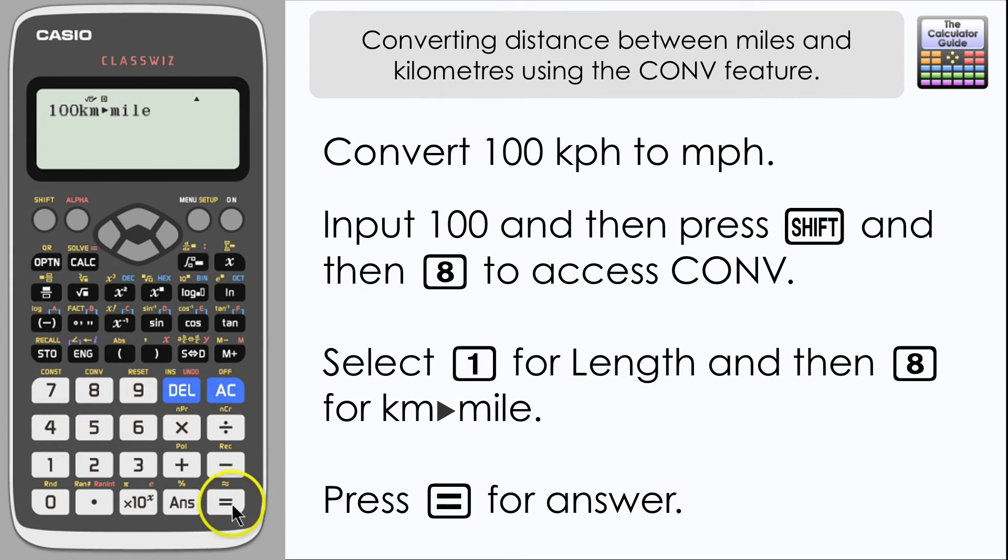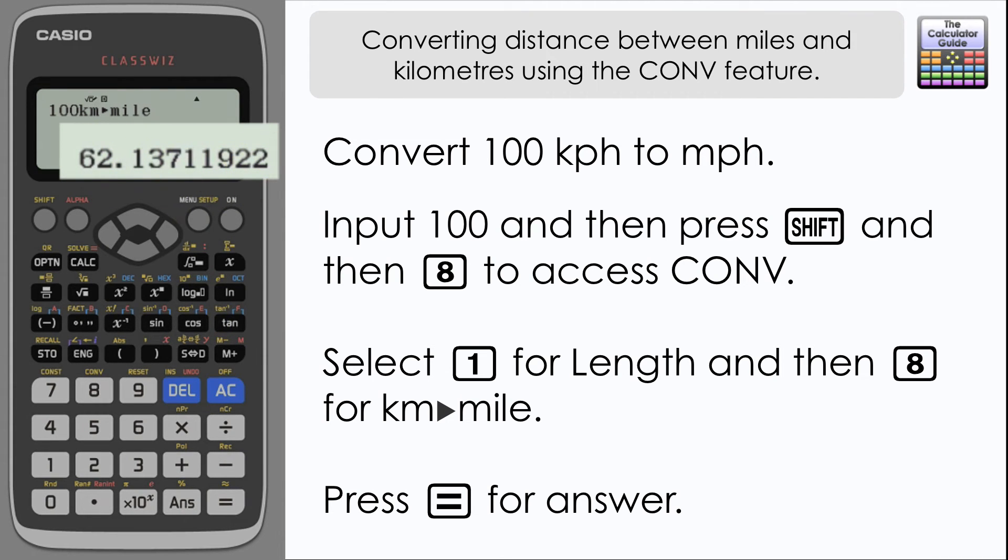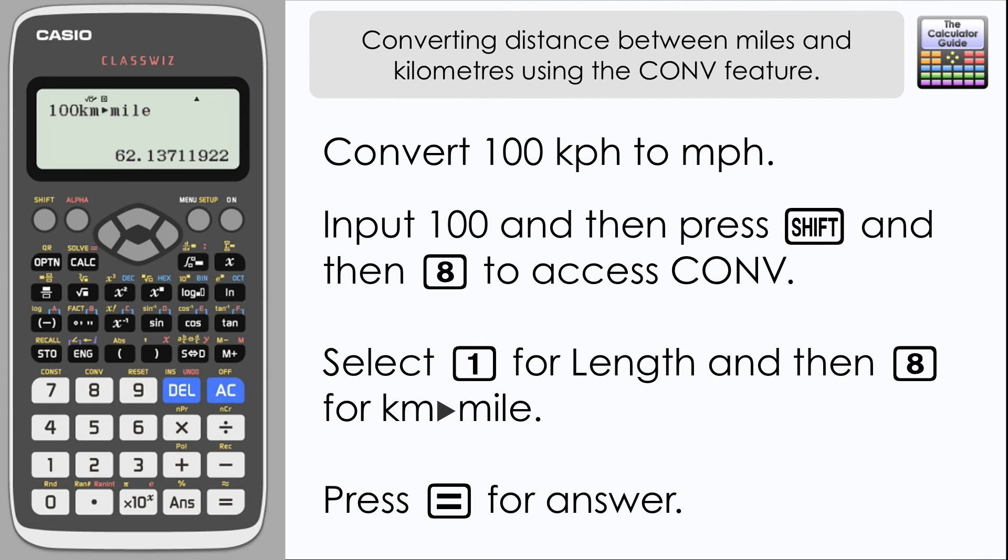Press equals and here we have our answer: 62.14 to two decimal places. So we can convert the equivalent speeds—100 kilometers per hour to 62.14 miles per hour.